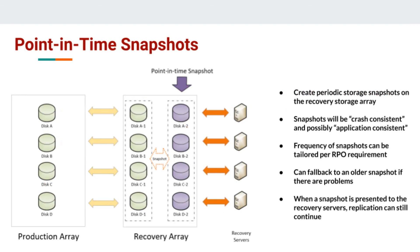Just about every modern disk array will allow you to take snapshots of your data at any given point in time, and this is a very powerful tool to have for recovery. If you look at our diagram, on the left we'll have our production array, and in our example we're showing four disks in green there: A, B, C, and D. In the middle of the diagram we have our recovery array, and you'll see there are four green disks there: A1, B1, C1, and D1.